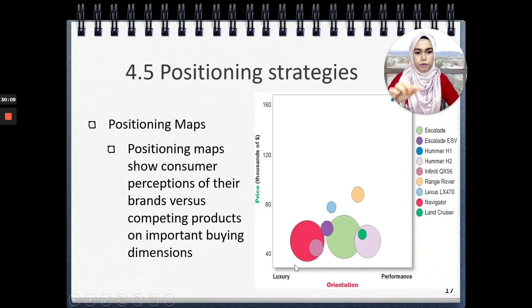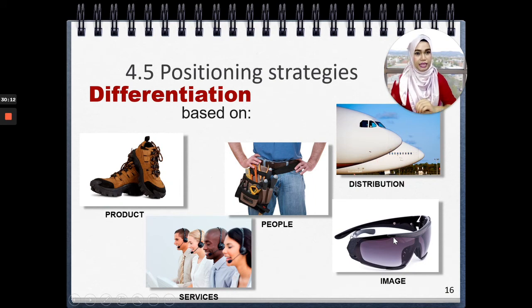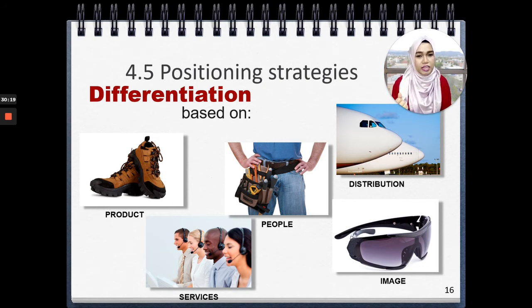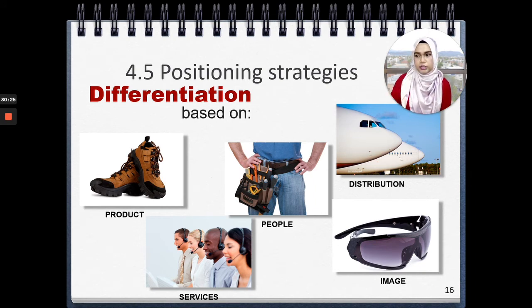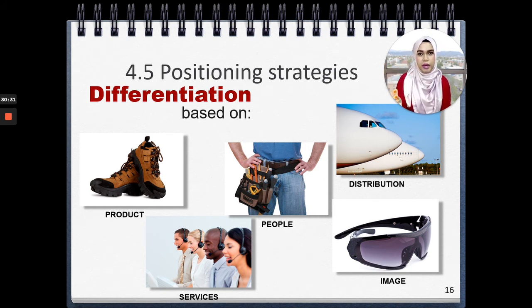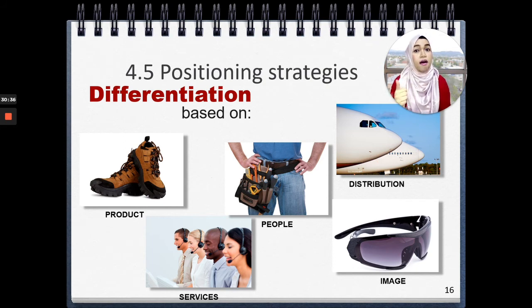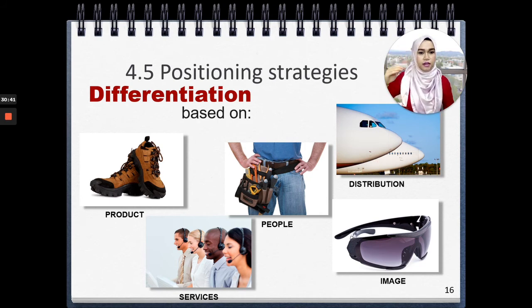Lastly, you can differentiate by image. Image is related to the exclusivity of the brand — it can be as simple as Louis Vuitton, where the image speaks for itself. Or Hilton Hotel — the differentiation is based on the image of Hilton. When you hear someone stayed at Hilton, you put in your mind that it's very high standard. The image is very high. So that is the example of differentiation based on image.